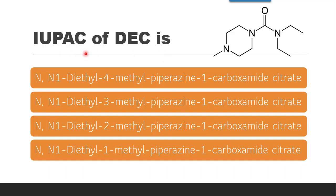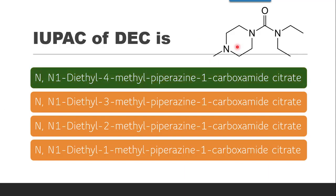Next question: IUPAC of DEC. This structure is combined with the citrate salt. The correct answer is NN1-Diethyl. If you look at the structure, this is a piperazine ring. This is methyl, this is carboxamide, this is diethyl — NCH2CH3, CH2CH3 — and this is amine. So it is NN1-Diethyl; at the fourth position there is methyl on the piperazine ring; the piperazine ring's first position contains carboxamide; plus the citrate salt. The correct answer is the first option.